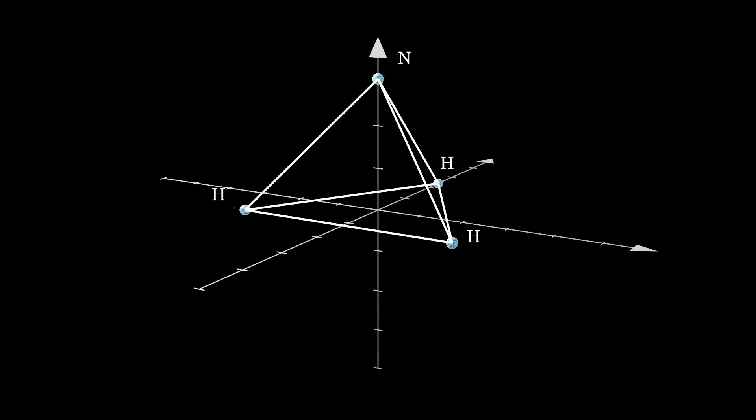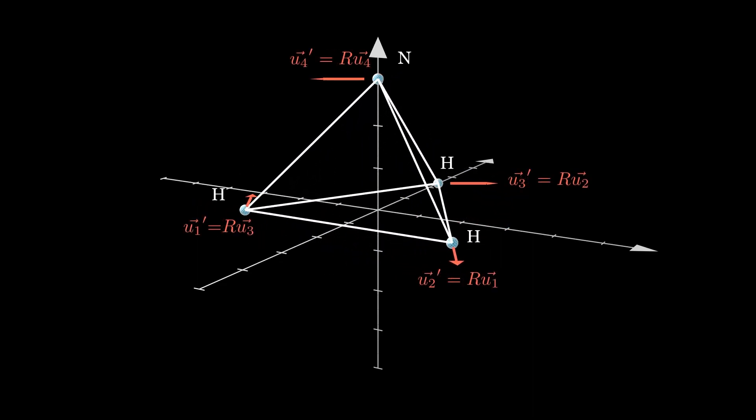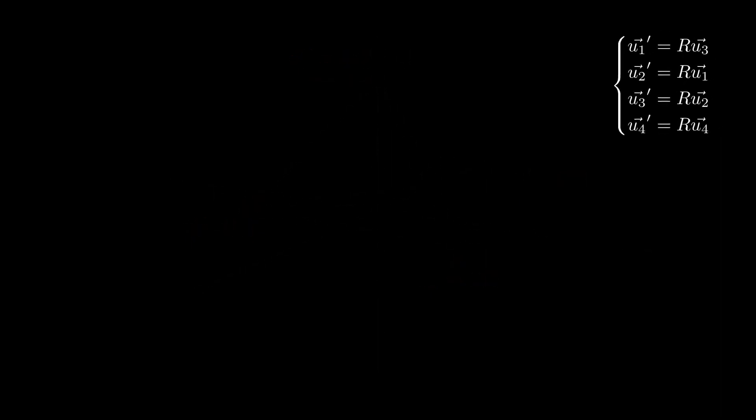A rotation acts in two ways on our displacement vectors. The atoms change position, and the displacement vectors are rotated. For example, the new atom 1 position is occupied by the rotated atom 3. This is why the new displacement vector U1' is equal to Ru3, where R is the rotation matrix. Doing this for every atom, we obtain four transformations. Again, we can write it in a matrix form, and define by gamma of C3 this 12 by 12 matrix.